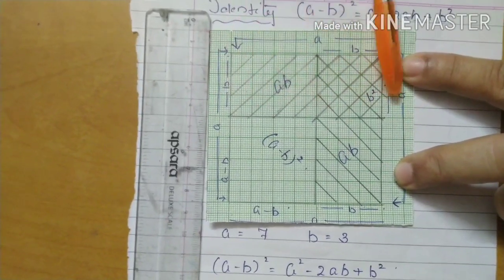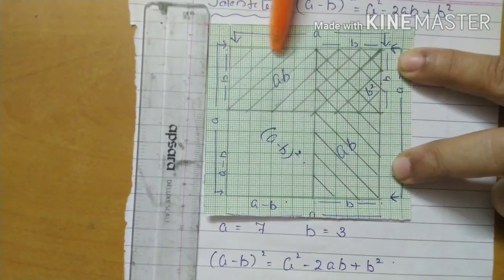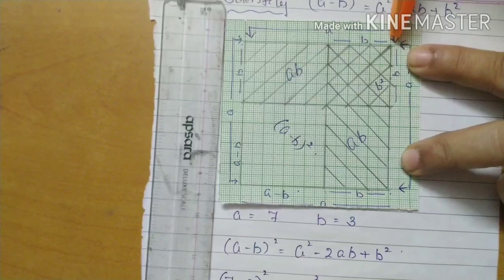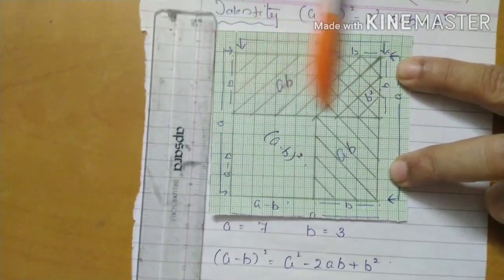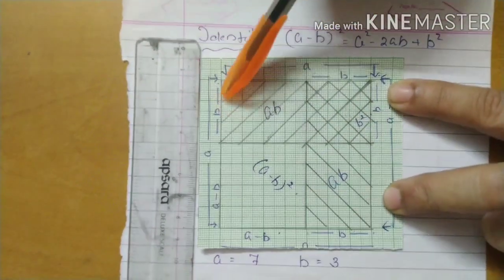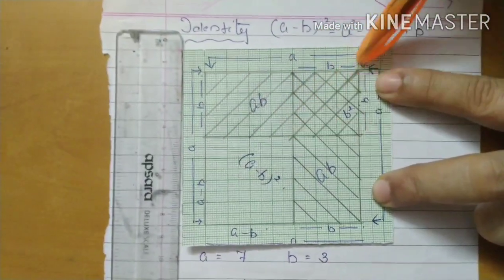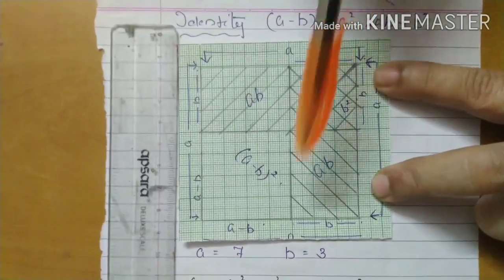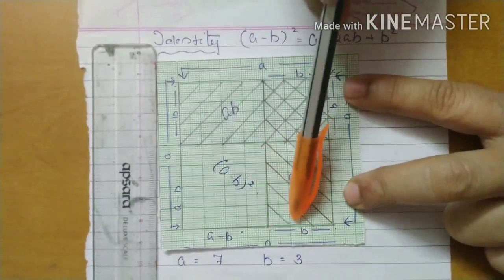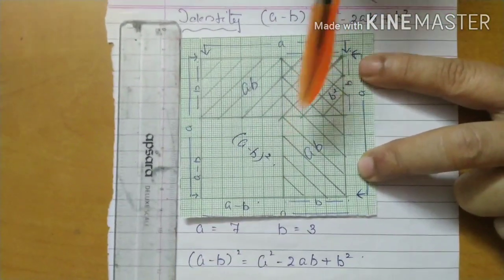This full is AB. Actually from here, this is A and this is B, so this full part is coming AB. One side we are drawing, and this also. This full is A and here it is B.